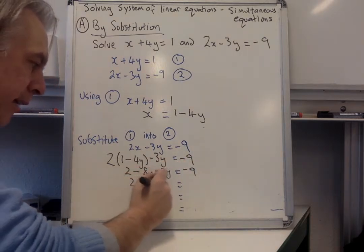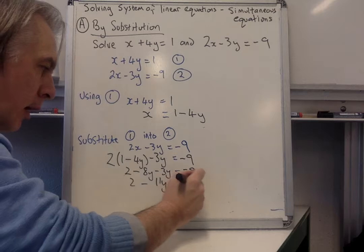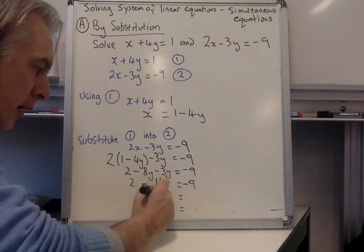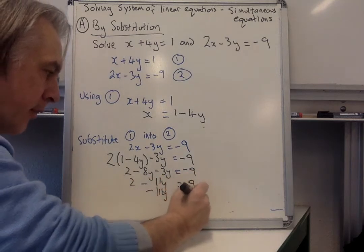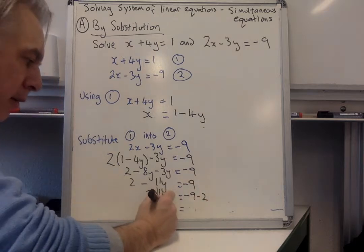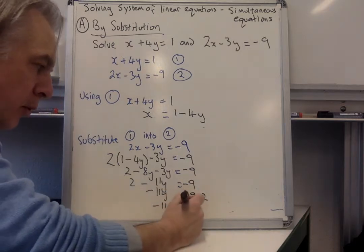The y's we can collect together. I want to make the 2 disappear from this side, so we're going to subtract 2 from both sides at the same time. I carry on, I've got minus 11y is equal to minus 11.